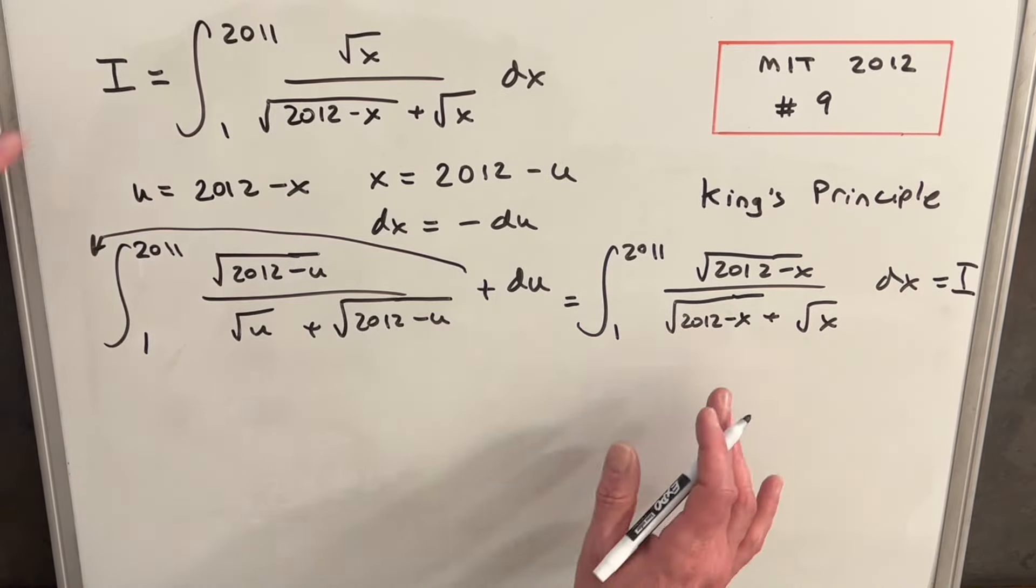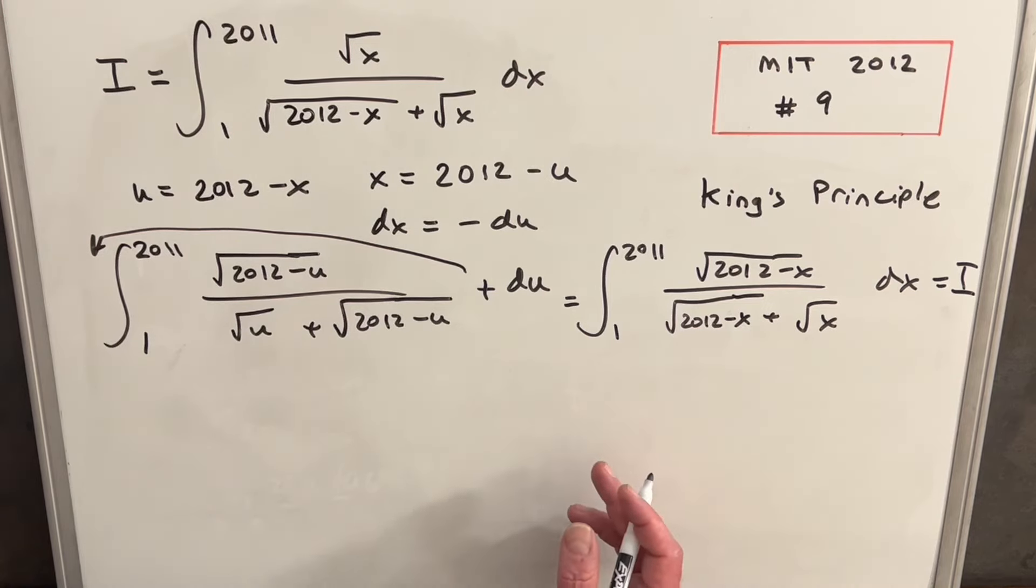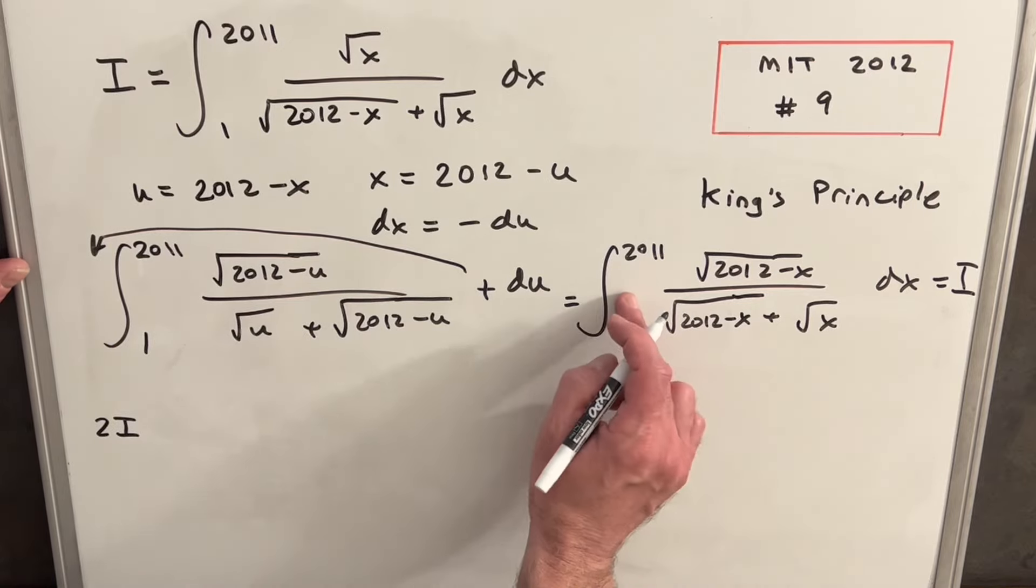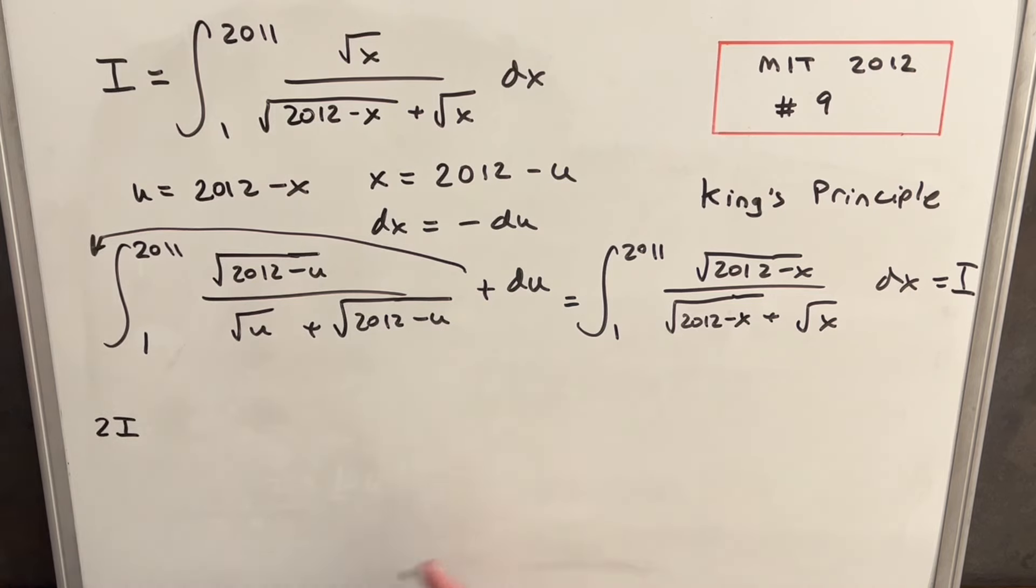Then at this point, what we can do is we can add this one and this one together. They're both the same thing, so we're just going to have two copies. We'll have two i. This is why we got it back with the same bounds, the same variable name x, so that we could then add these together.